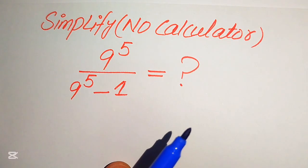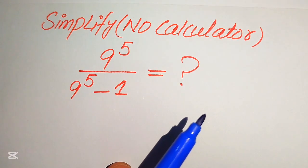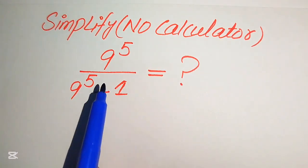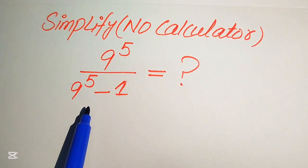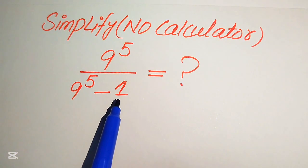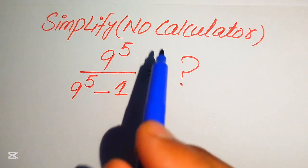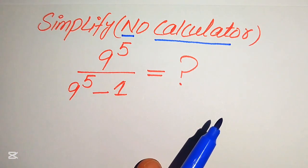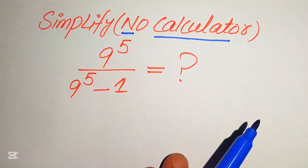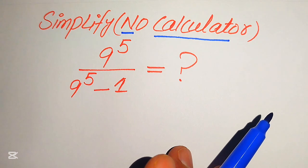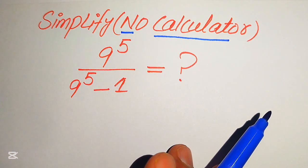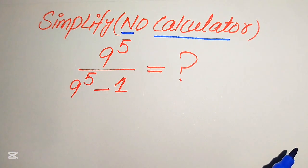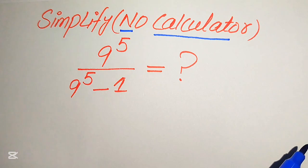Hello everyone. Today I want to show you how to simplify this algebraic expression into the lowest form without using a calculator. We have 9 to the power of 5 divided by 9 to the power of 5 minus 1, and we need to write this expression in the lowest form. A calculator is not allowed, so I'll give you a step-by-step solution. If you have another method in mind, please write it in the comment section.